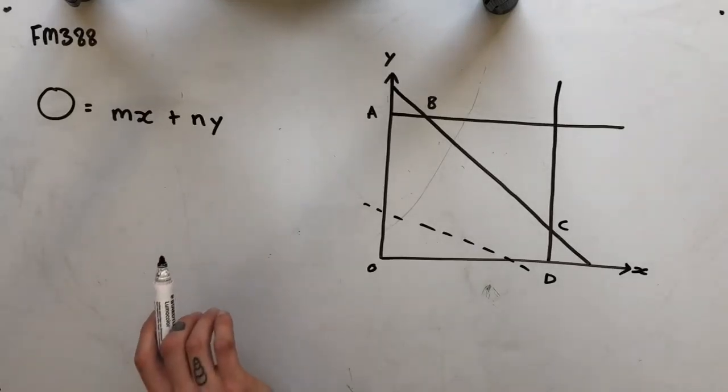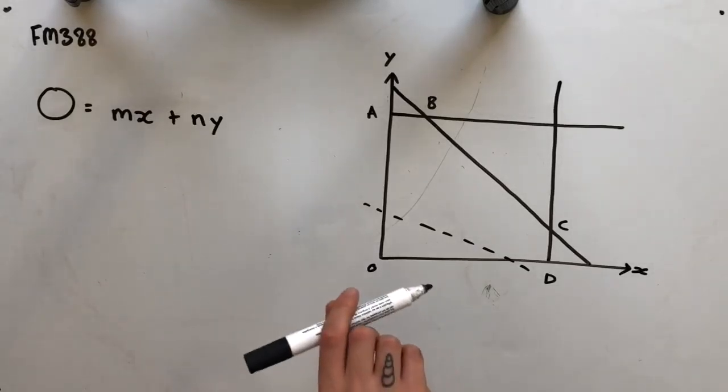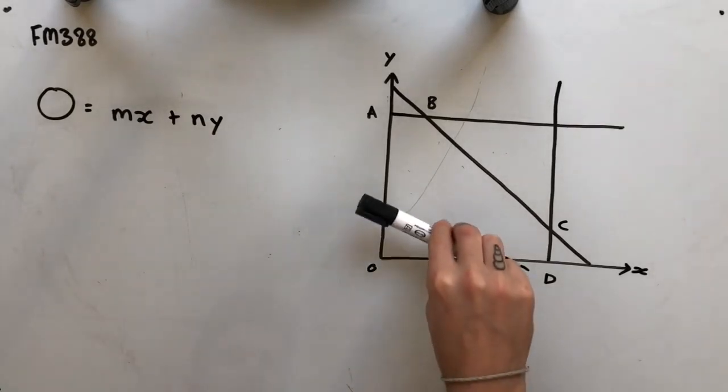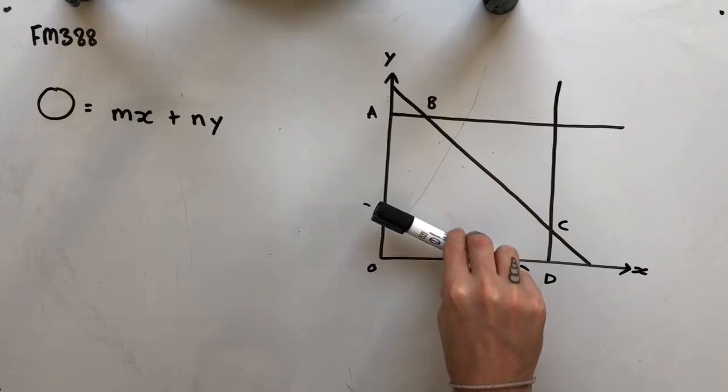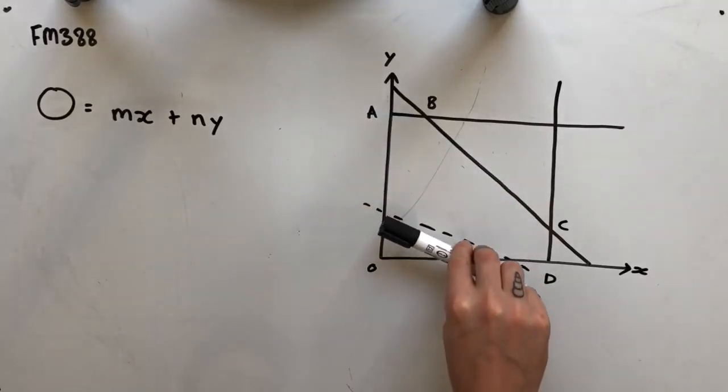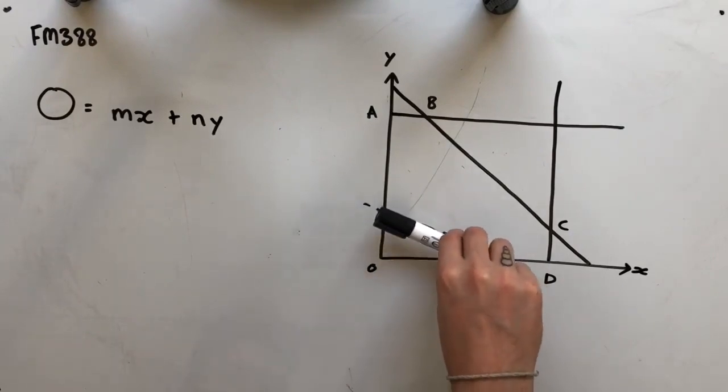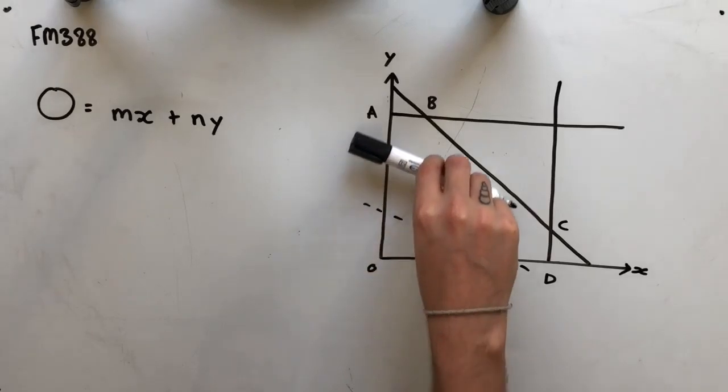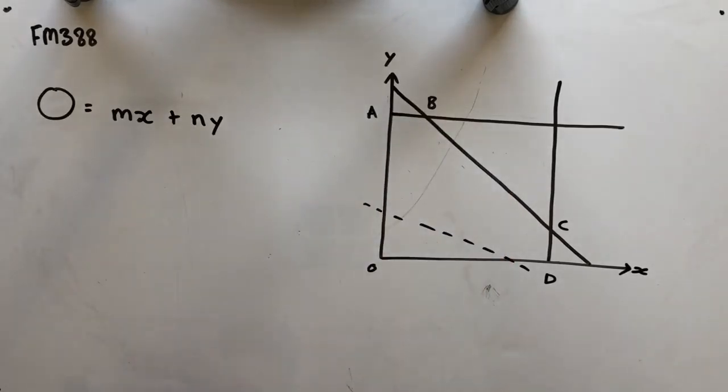So what we can do is use the sliding line technique, which basically means that if we were to continue the gradient of this line upwards, so sort of sliding this line up, the final point we find ourselves passing through as we sort of move through the feasible region will be the maximum.